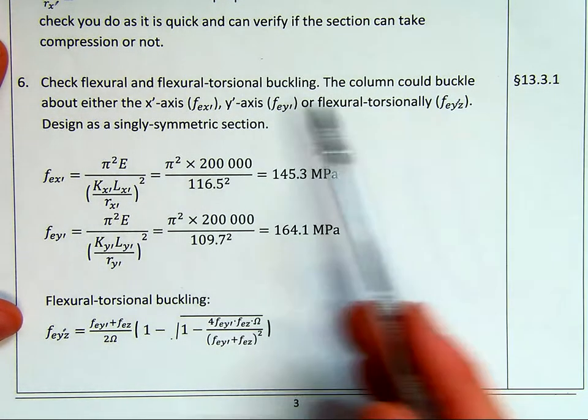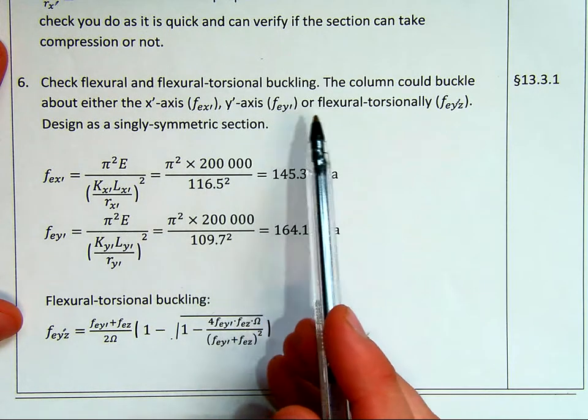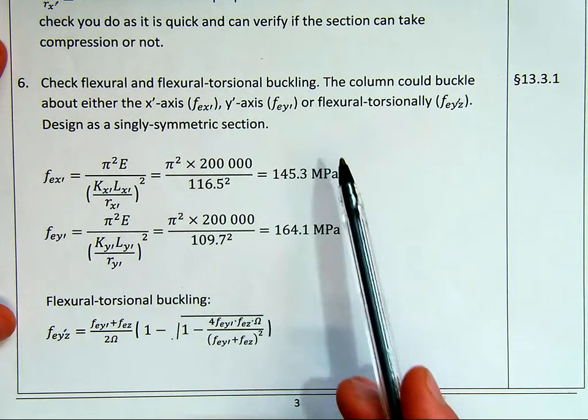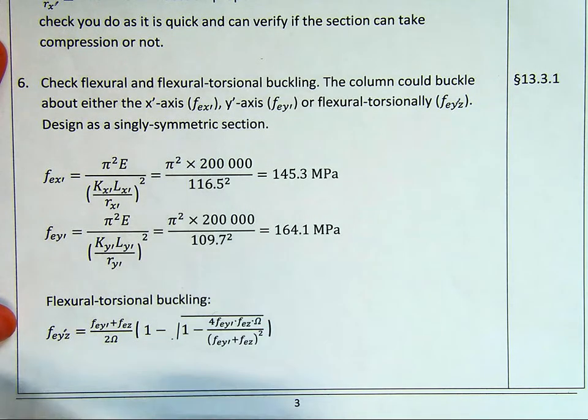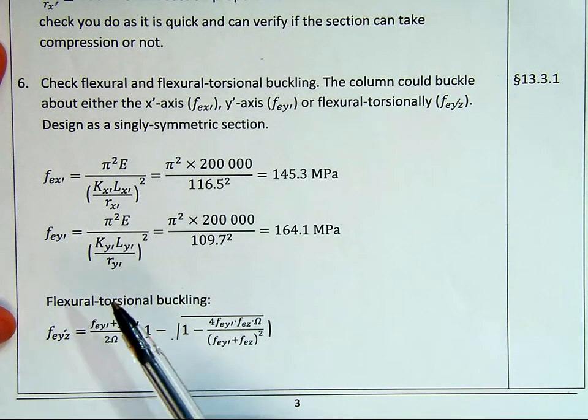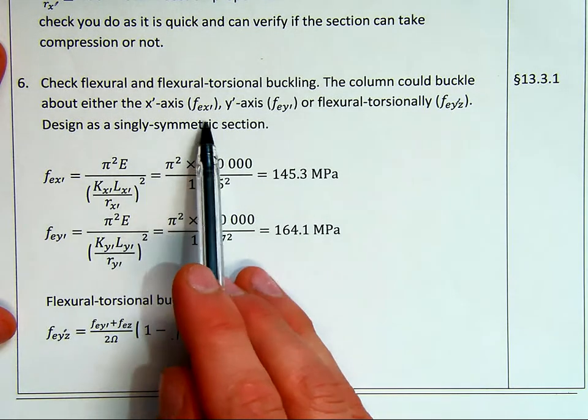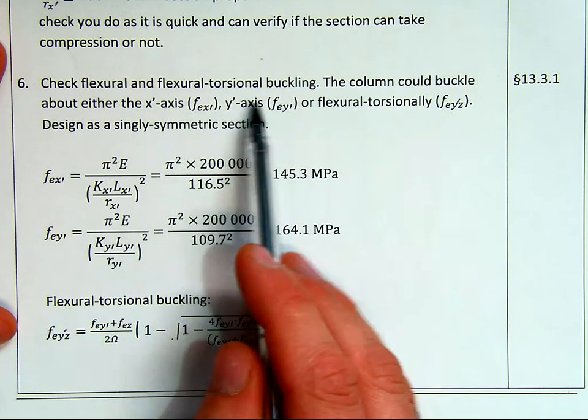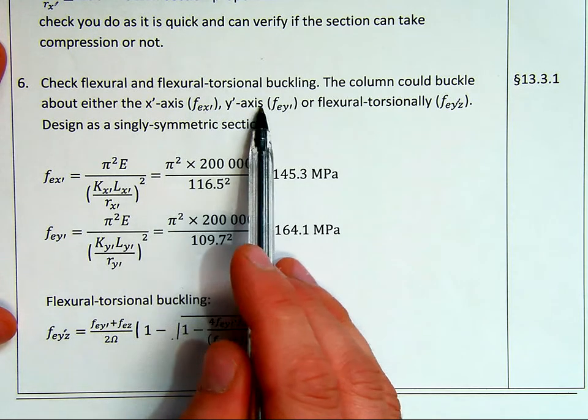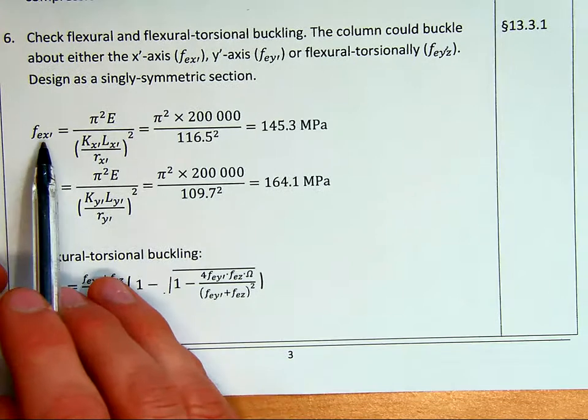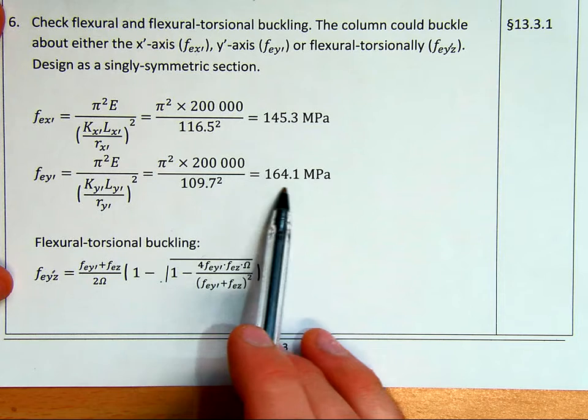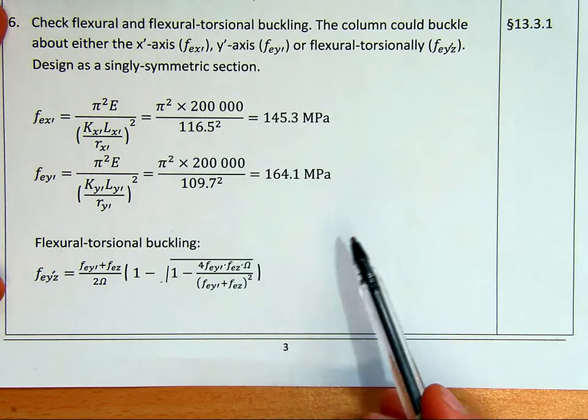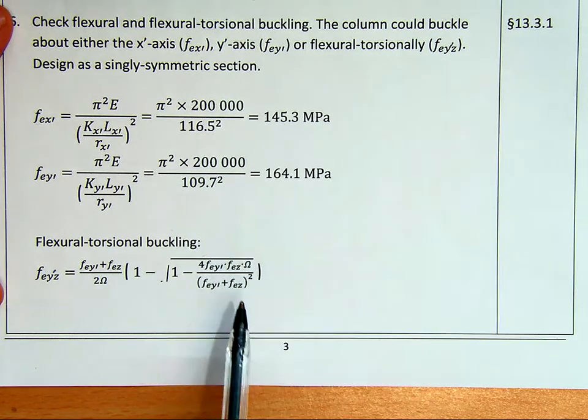Now we're going to check our flexural and flexural torsional buckling. The column will buckle about either the X-primed, Y-primed, or flexural torsional. This is because it's a singly symmetric section. There's one axis of symmetry, which is the Y-primed axis. If it was an asymmetric section or a doubly symmetric section or a cruciform, we would use a different approach. This is simply because it's singly symmetric, we check X-primed or Y-primed, and because the axis effective length is different, we're going to check either of those. So there is our buckling stress about the X-primed, Y-primed. Once again, this is slightly higher. So that means it's stronger. So this is our weakest axis.